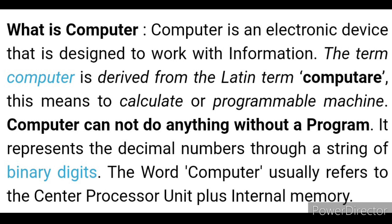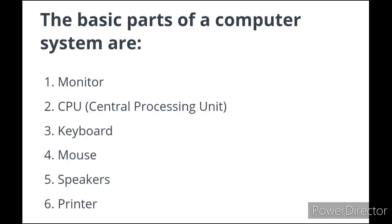The basic parts of a computer system are: the first is the monitor, the second is the CPU — the central processing unit, the third is the keyboard, the fourth is the mouse, the fifth is speakers, and the sixth is the printer.